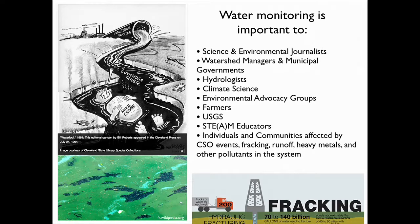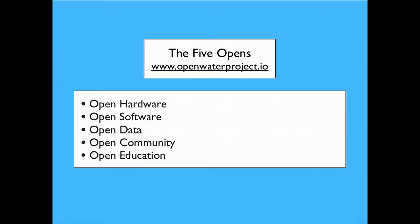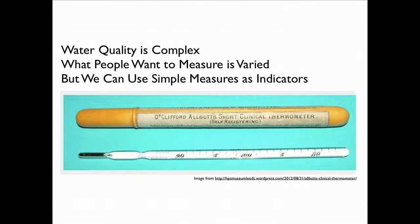Water monitoring — who cares about it? There are a lot of people: science and environmental journalists, watershed managers and municipal governments, hydrologists, anyone working on climate science and rising sea levels, farmers, USGS, and individuals and communities affected by water events such as pollution, combined sewer outflows, and similar issues. What we've coalesced around are five opens: open hardware, open software, open data, open community, and open education.